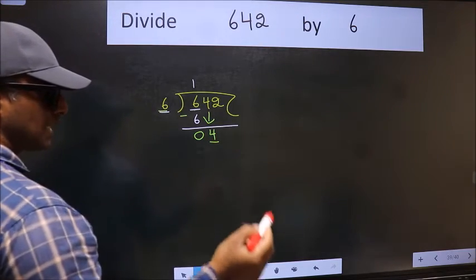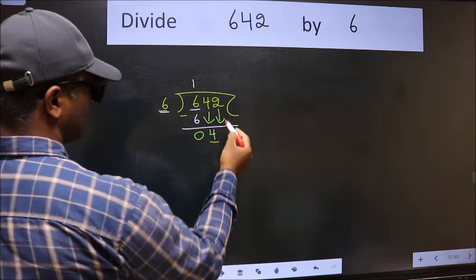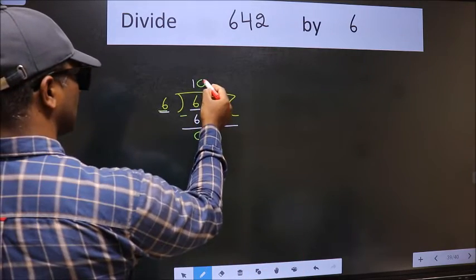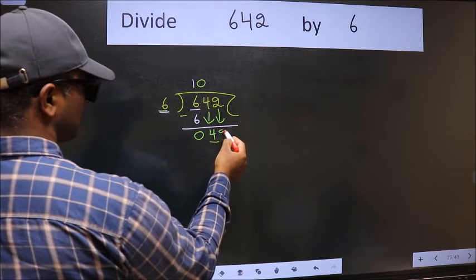So we should bring down the second number. And the rule to bring down the second number is we should put 0 here. Then only we can bring this number down.